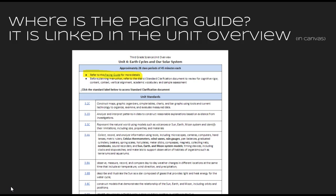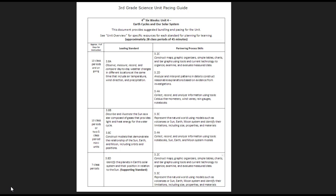The pacing guide can be found at the top of the unit overview. Once you get there, you can click on the hyperlink I have highlighted, and you will get to the pacing guide. The pacing guide for this six weeks is divided up into three mini sections — two mini units that are about 10 class periods, and then the last one is about seven class periods.